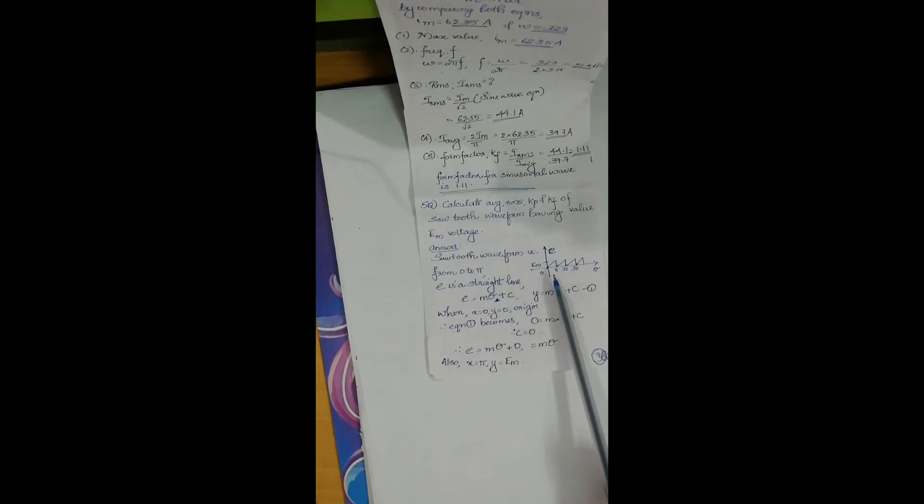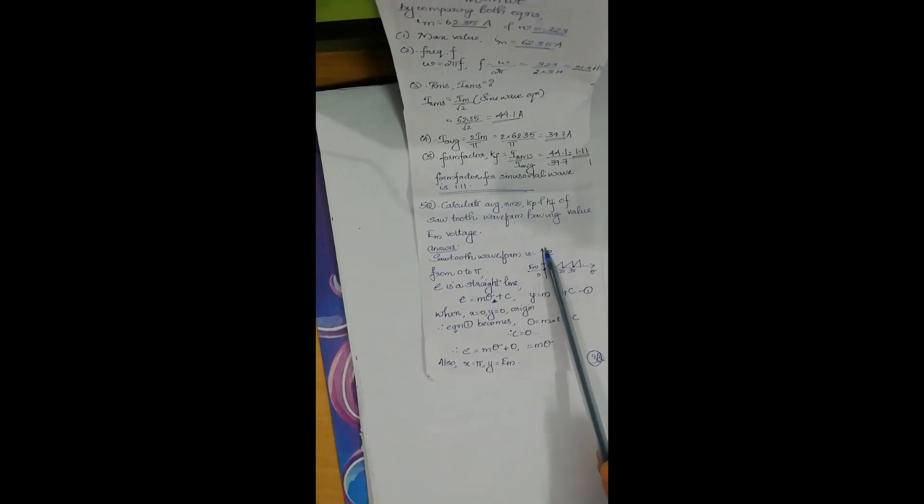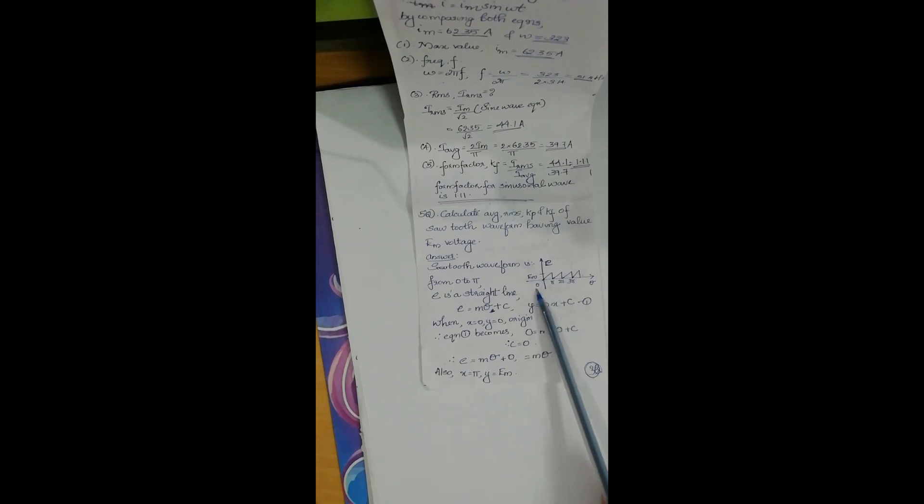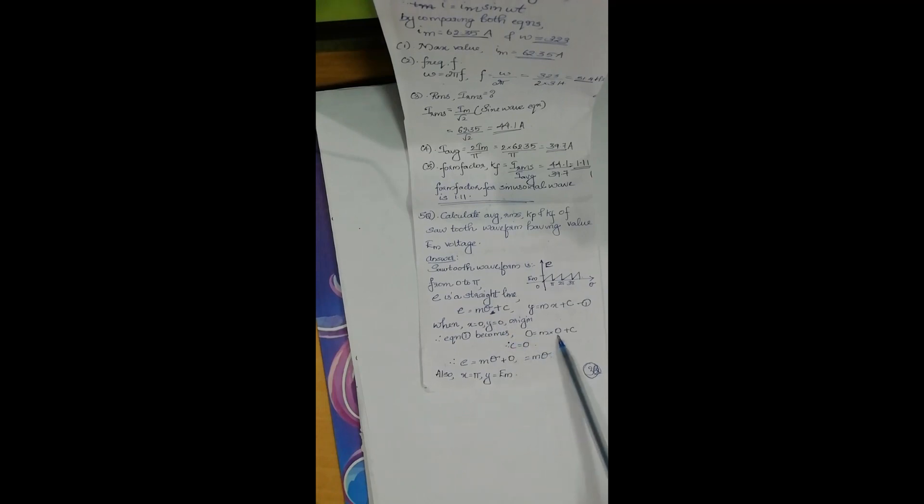Consider two conditions. The first condition is the initial condition, that is when x is equal to 0, y is equal to 0. That is our origin point. So when x is substituted as 0, y is substituted as 0. So the constant c value is obtained as 0.